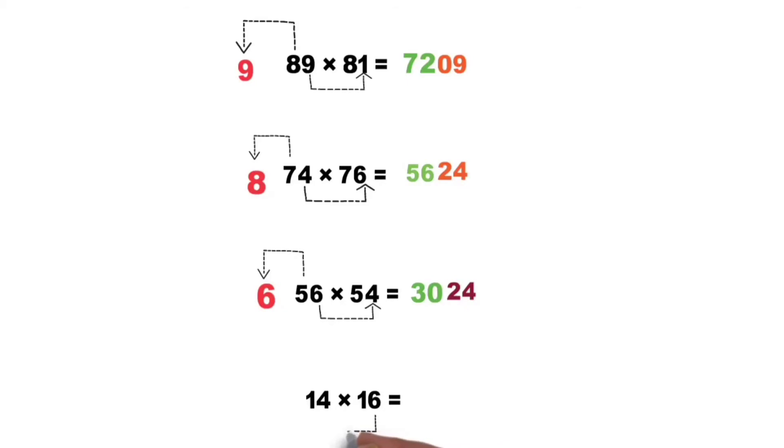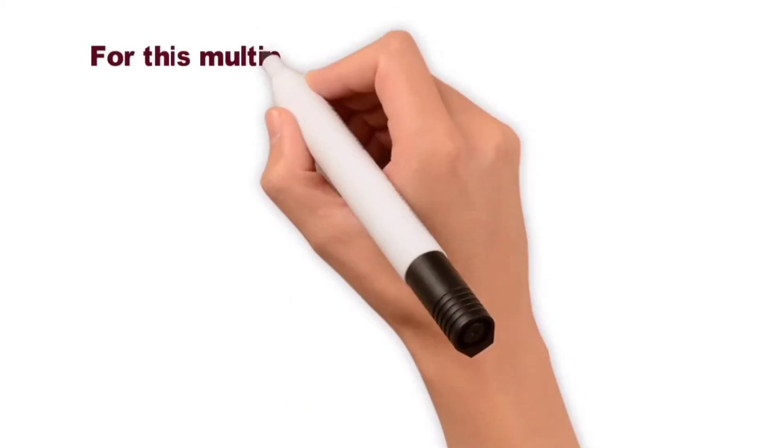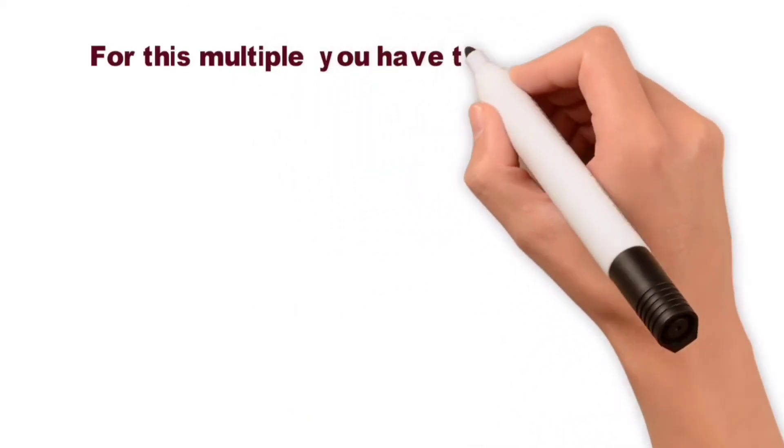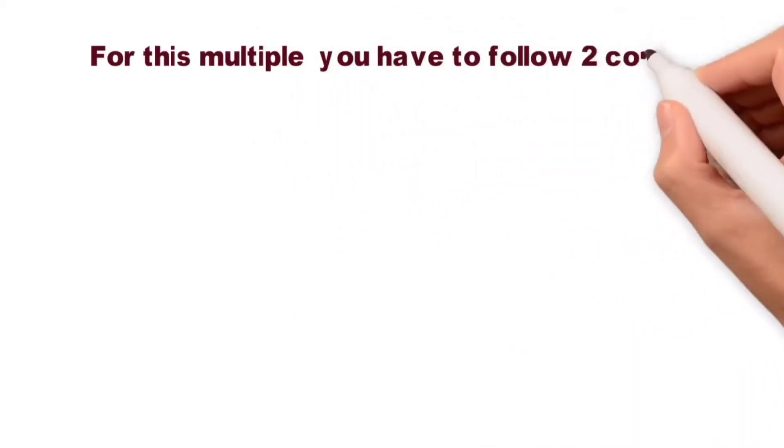5 times 6 equal to 24. Now one, next number is 2, so 2 times 1 equal to 2. So answer is 224.